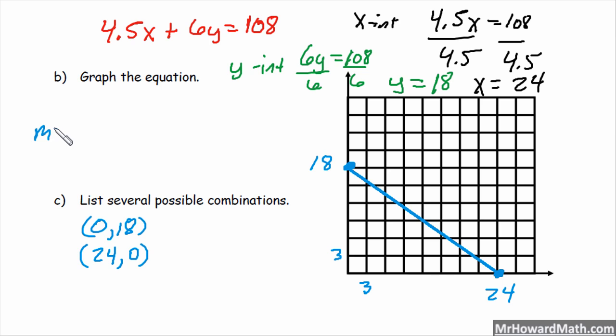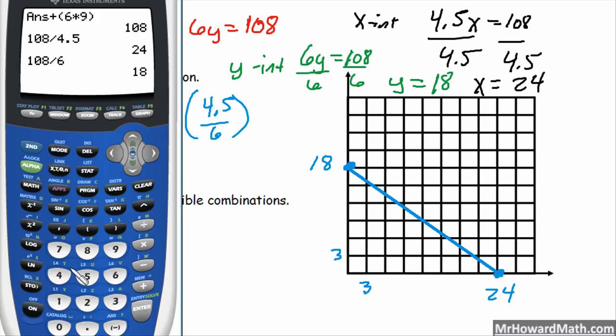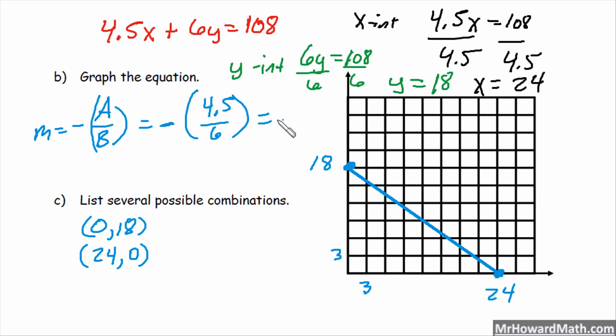Remember, slope from standard form is equal to the opposite of the a value divided by the b value. So for us, that's the opposite of 4.5 divided by 6. We'll reduce that with our calculator: 0.75, that's 3 fourths negative, so negative 3 fourths. So we can use the concept of slope to help us identify more ordered pairs. So from one ordered pair to the next, my y goes down 3 and my x goes up by 4. Down 3, right 4. That's what slope means.